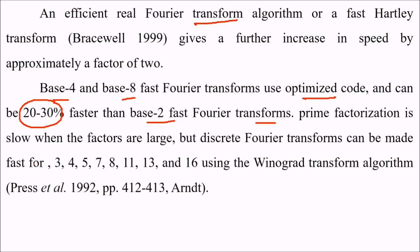Prime factorization is slow when the factors are large, but DFT can be made fast for 3, 4, 5, 7, 8, 11, 13, and 16 using the Winograd transform algorithm.